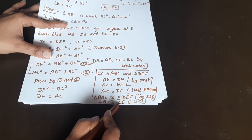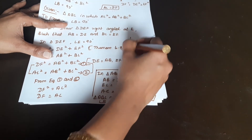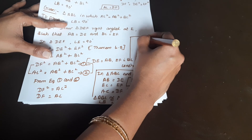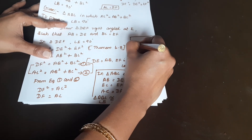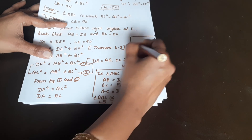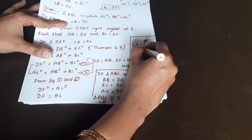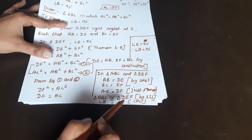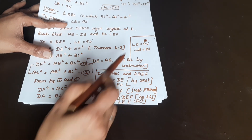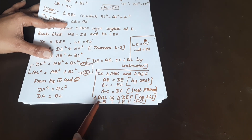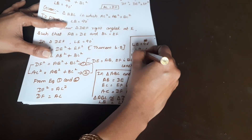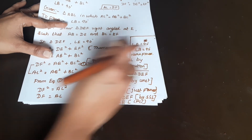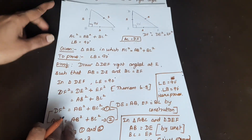Angle E is 90 degrees. Since angle B is equal to angle E by CPCT, and angle E is 90 degrees, therefore angle B is equal to 90 degrees. Hence proved. Theorem 6.9 is complete.